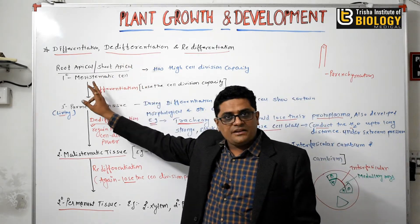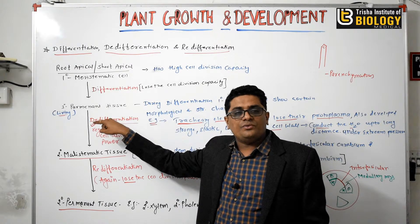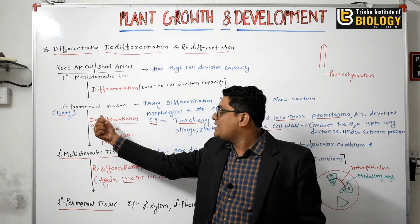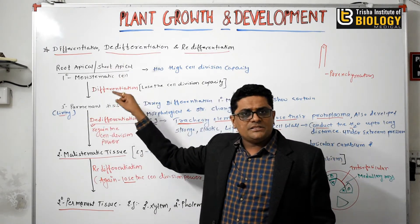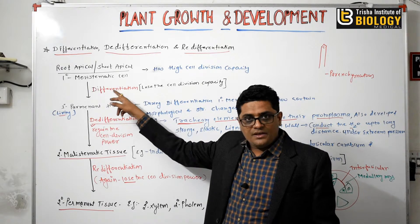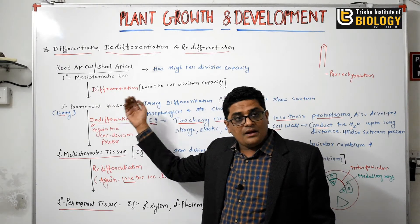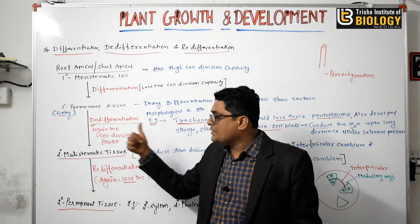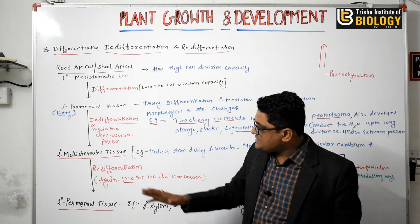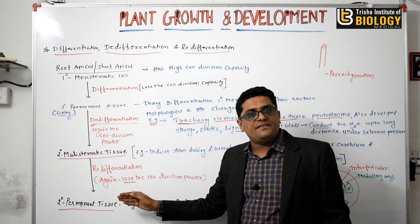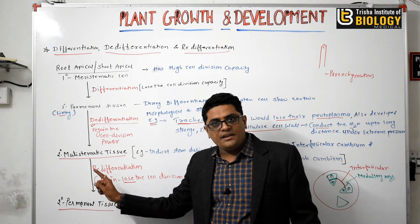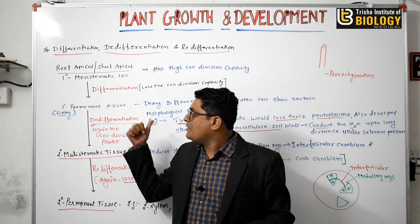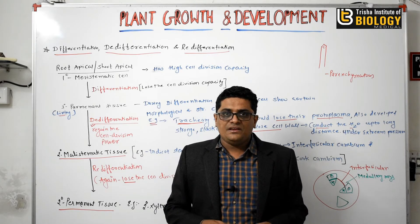In summary: primary meristematic tissue differentiates and is converted into primary permanent tissue — once the meristematic tissue loses its cell division capacity and becomes permanent tissue, this process is called differentiation. When this primary permanent tissue again regains cell division capacity and becomes secondary meristematic tissue, it is known as de-differentiation. And finally, when secondary meristematic tissue again loses its cell division capacity and is converted into secondary permanent tissue, this is known as re-differentiation.